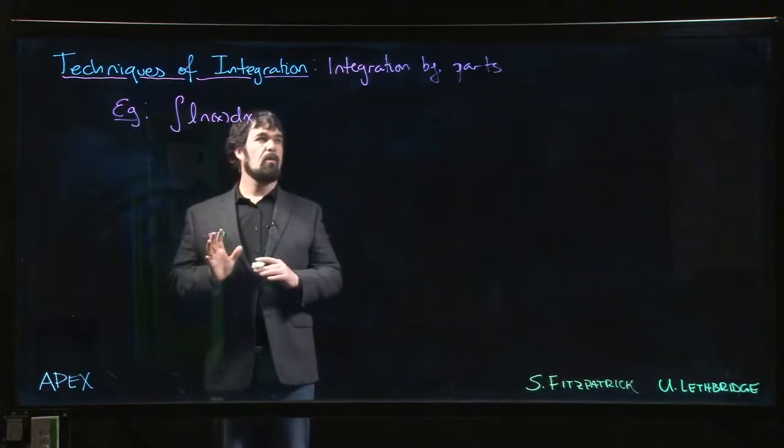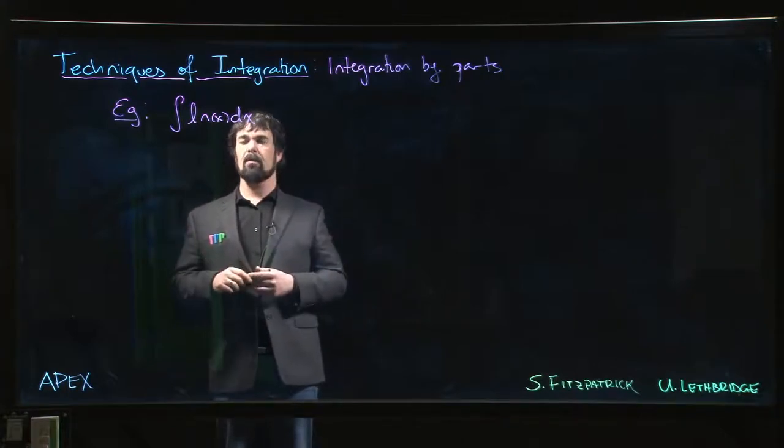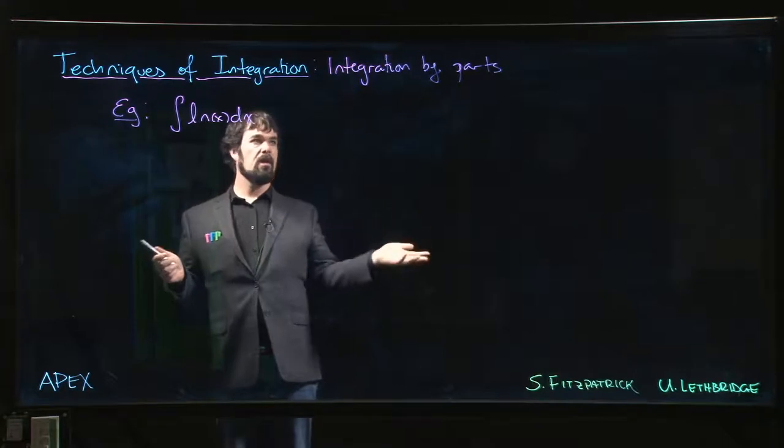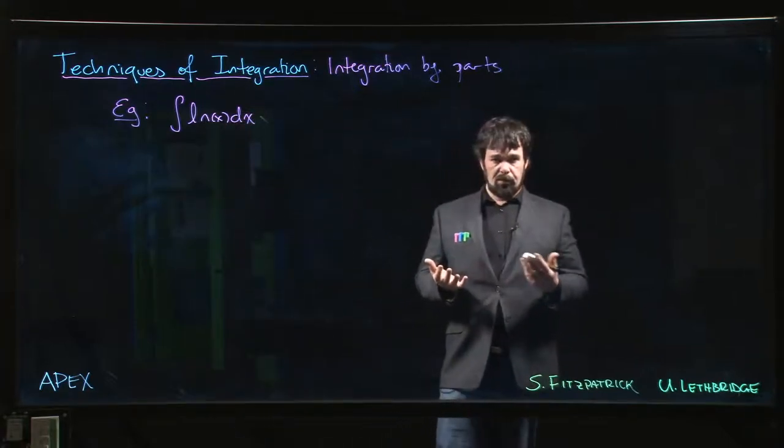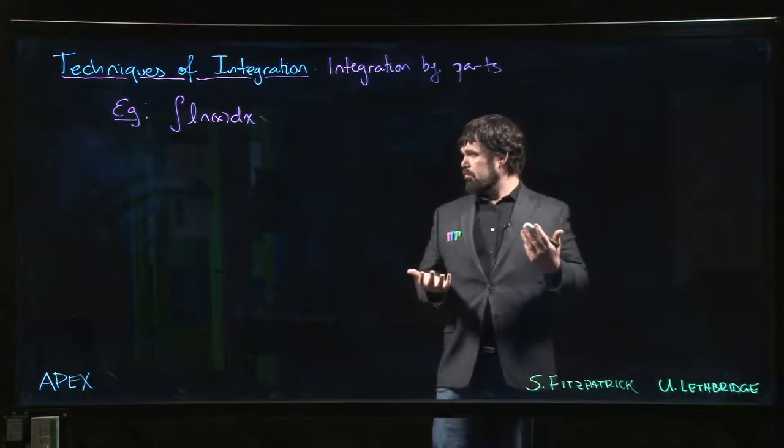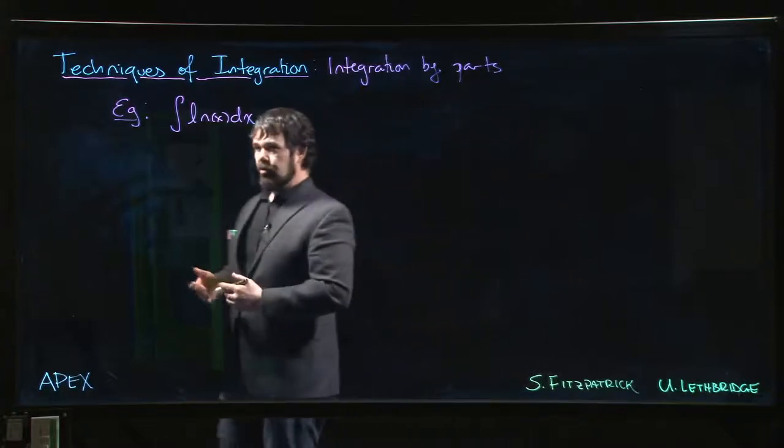Here's another classic example with integration by parts, although it doesn't initially look like an integration by parts problem because we don't see a product. We have this idea that integration by parts has something to do with reversing the product rule, and yet all we see is the log of X. So why is integration by parts useful here?